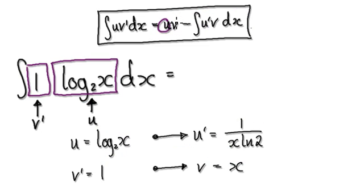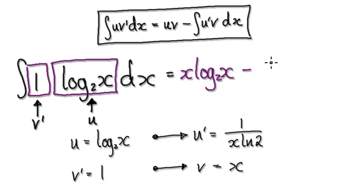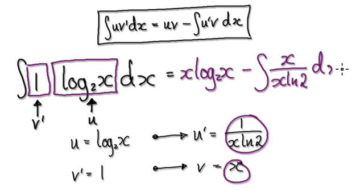So now blindly follow the formula — it's saying get u times v. So that would be x times log base 2 of x. And then take away the integral of u prime times v. So that would be x over x times natural log of 2, and then you've got your dx here.